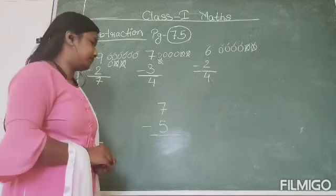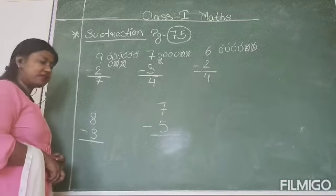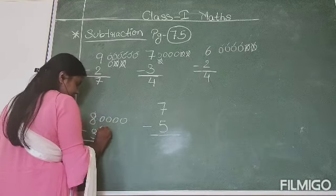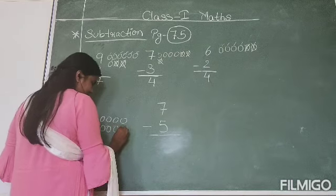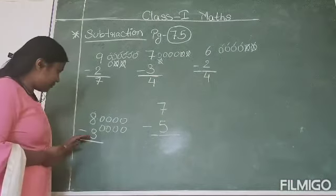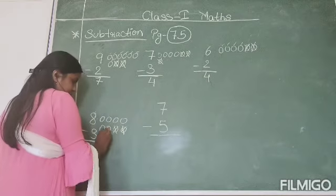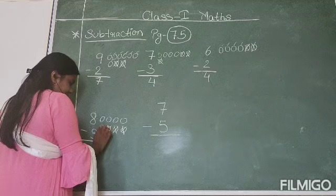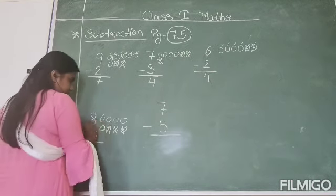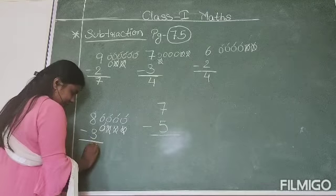So this is how you do subtraction. Now let's continue with the last 2 questions. This number is 8. So we will draw 8 circles — one, two, three, four, five, six, seven, eight. We have drawn 8 circles. Now the second number is 3, so we will cut down 3 circles — one, two, three. Let's count the remaining circles — one, two, three, four, five. So your answer is 5.